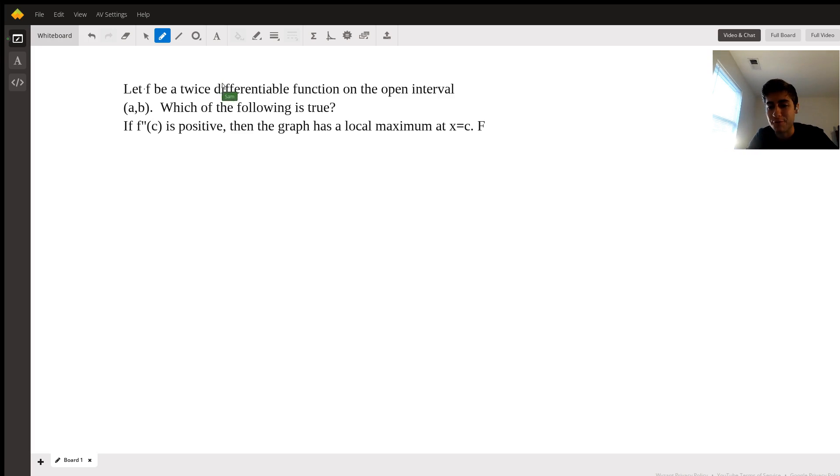So f is false. So the next claim is the graph f has a local minimum at x = c. The graph has a local minimum at x = c if f''(c) = 0.